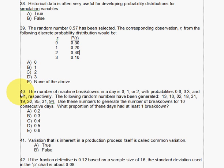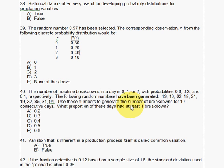Now question 40 is a little bit tougher, but I know you guys can handle it. In this case we have machine breakdowns that can happen each day: zero breakdowns, one breakdown, or two breakdowns. There's a 60% chance of no breakdown, a 30% chance of one breakdown, and a 10% chance of two breakdowns. The probabilities are the same every day — even if it didn't break down yesterday, you still have these same probabilities today.